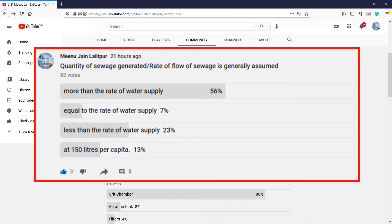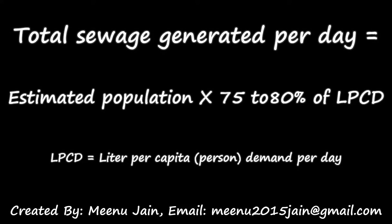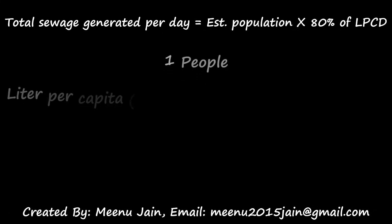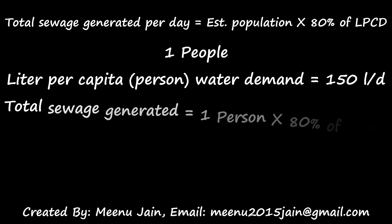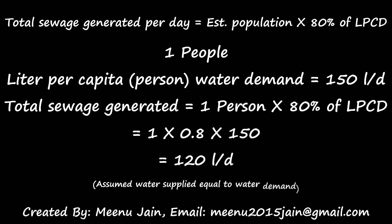To answer this question, let's look at what the quantity of sewage generated or rate of flow of sewage means. Total sewage generated per day is estimated as: population multiplied by 75 to 80% of LPCD, where LPCD is liters per capita per day. For 1 person, total sewage generated per day would be 1 multiplied by 80% of LPCD.